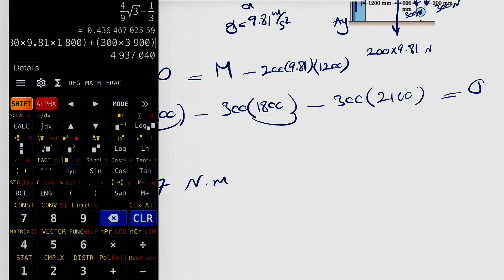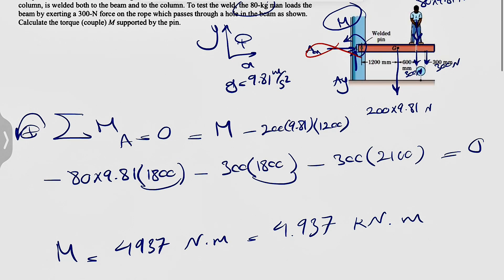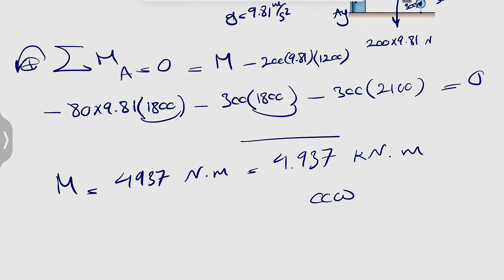Or we can just divide that by a thousand two, so 4.937 kilonewton meter. And our assumption for the direction of the couple was correct, so it'll be counterclockwise since it's positive.